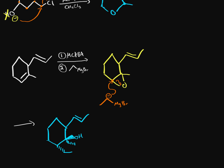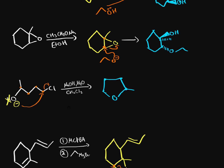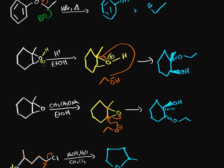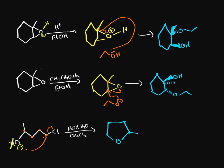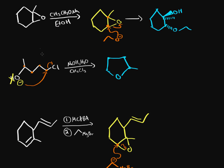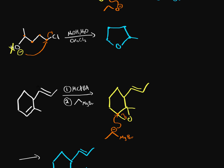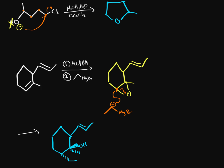To reiterate what we did today: the first reaction was an ether cleavage with a strong acid. The second was an acid-catalyzed epoxide opening. The third was a base-catalyzed epoxide opening. The fourth was an intramolecular SN2 mechanism to create an ether ring. And the fifth involved creating an epoxide using MCPBA — a peroxy acid — then opening it with a Grignard reagent, which is an organometallic reagent.